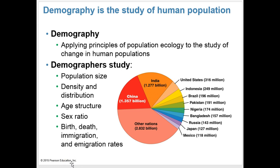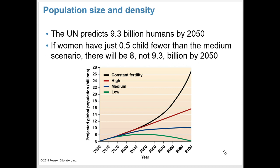Our global human population is more than 7.1 billion, spread among more than 200 nations. A pie chart shows how our population is spread amongst different nations, with China at the highest at 1.357 billion, followed by India. The UN predicts 9.3 billion humans by the year 2050. If women have just 0.5 fewer children than the medium scenario, there would be 8, not 9.3 billion by 2050.